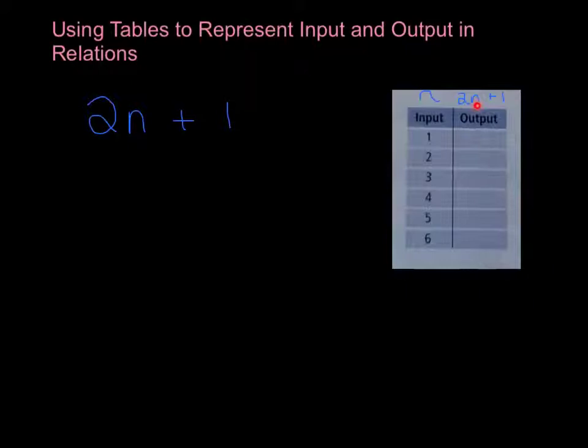So when we input the number 1 into our expression, we would come up with 2 multiplied by 1 plus 1. So 2 times 1 is 2 plus 1. That would equal 3. So then our output for 2n plus 1, when our input is 1, would be 3.